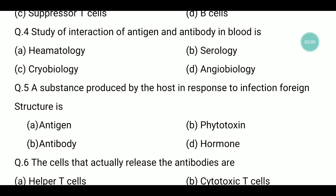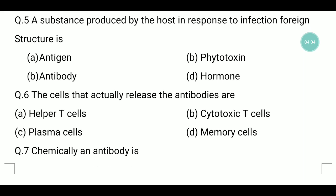Question number five: a substance produced by the host in response to infection or a foreign structure — what is it called? The answer is antibody. Antibody is a type of protein that provides immunity. Antigen refers to the foreign particle such as a microorganism or pollen. Option B phytotoxin is the toxin produced from a plant, and hormone is a chemical messenger made of protein or steroid.